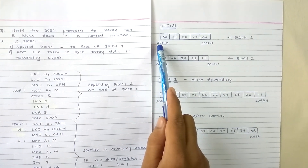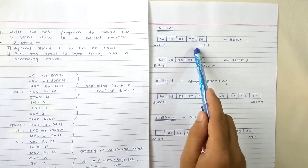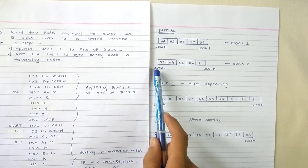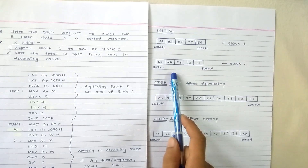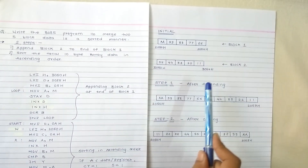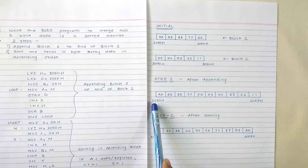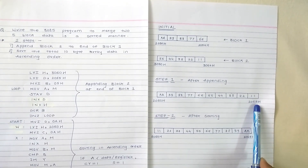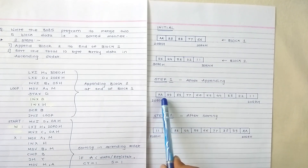Initially, block 1 data is located from memory location 2050H to 2054H, and block 2 data is present from 3050H to 3054H. We have to append block 2 to the end of block 1. After completing the first step, the merged data will start from 2050H and end at 2059H. The second step is sorting this merged data.